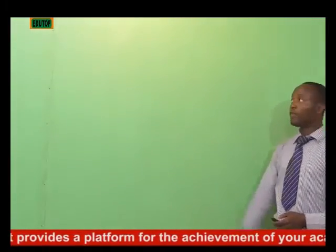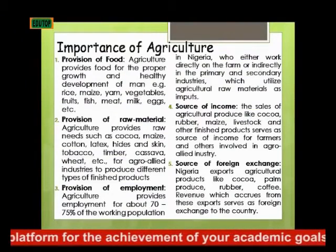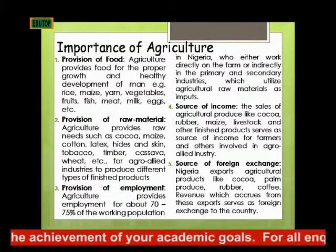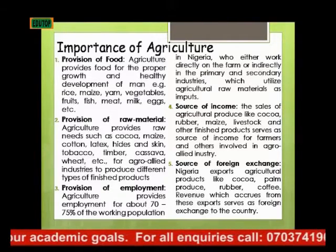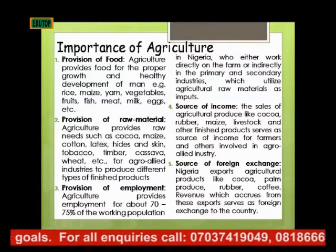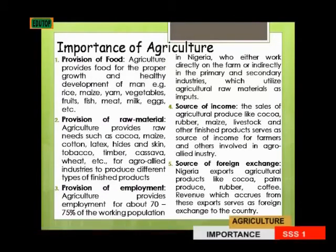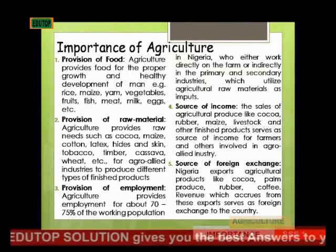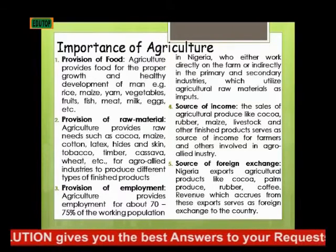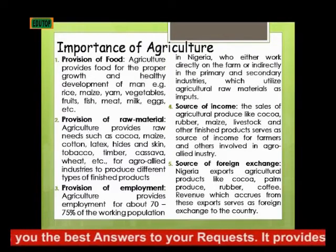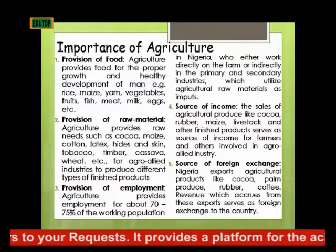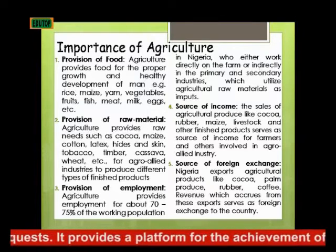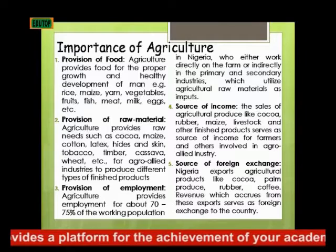Now we go to the impact of agriculture. The first impact is production of food. We all need food to survive. Agriculture provides food for the proper growth and development of man — the rice we eat, maize, yam, vegetables, fruits, fish, and meat are all examples of food provided through agriculture. It is only agriculture that produces the food we actually eat.